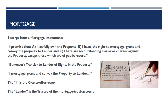Excerpt from a mortgage instrument: 'I promise that A, I lawfully own the property; B, I have the right to mortgage, grant, and convey the property to lender; and C, there are no outstanding claims or charges against the property except those which are public record.' In a section called Borrower's Transfer to Lender of Rights in the Property, the borrower pledges: 'I mortgage, grant, and convey the property to lender.' The 'I' is the grantor borrower. The lender is the trustee of the mortgage trust account. The word 'property' — when most people think of a mortgage situation, they're thinking of the real property first and foremost, or only. But in addition to the real property, there is paper property, commercial paper property, such as the mortgage and the note.